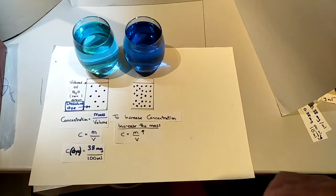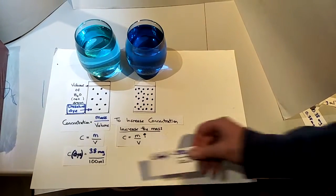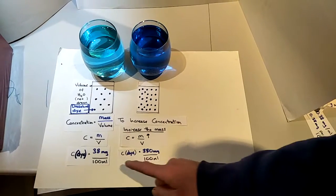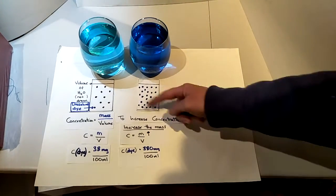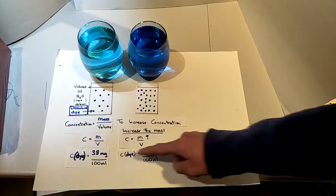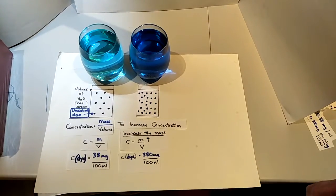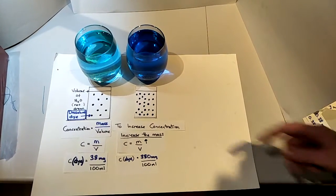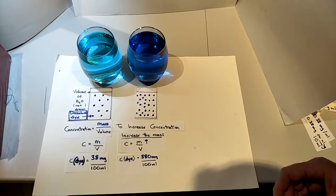So if I show you that increasing the mass with numbers, if we make instead of 38 milligrams, we've got 380 milligrams of the dye in this case, then we've increased the concentration.